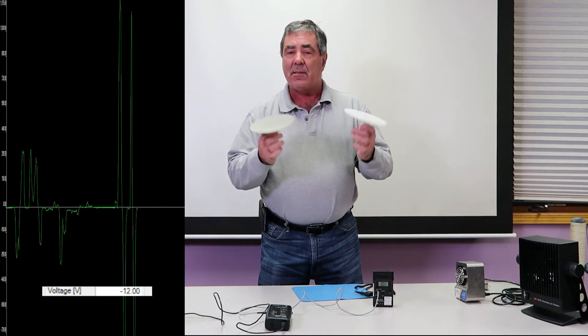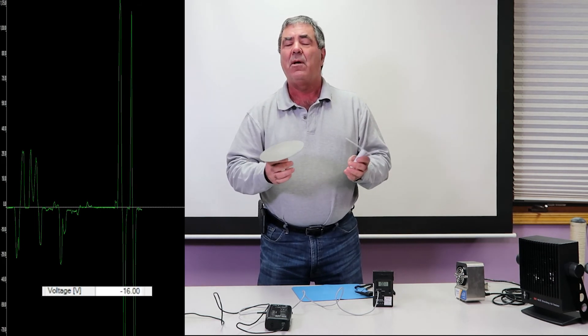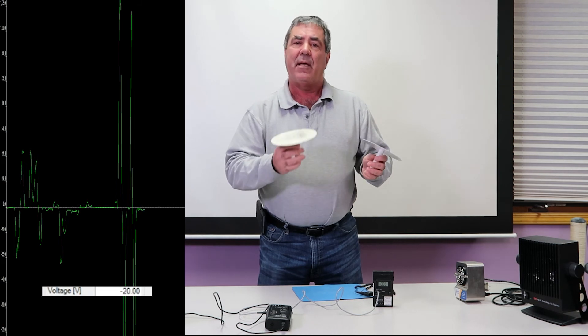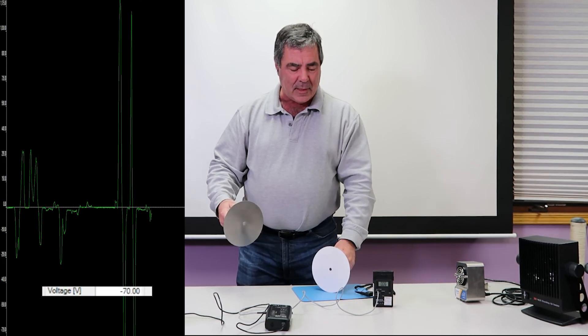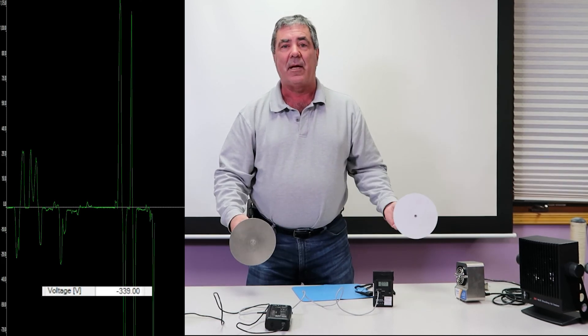So in processes, contact and separation of two materials always results in charging. You can get rid of them easily by grounding your metal. In the case of an insulator, if you can't, you need to use ionization.